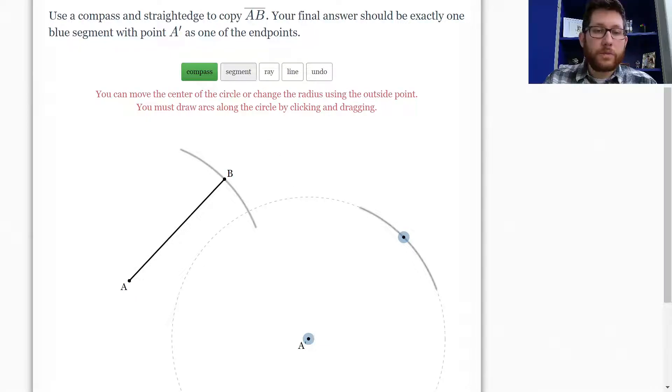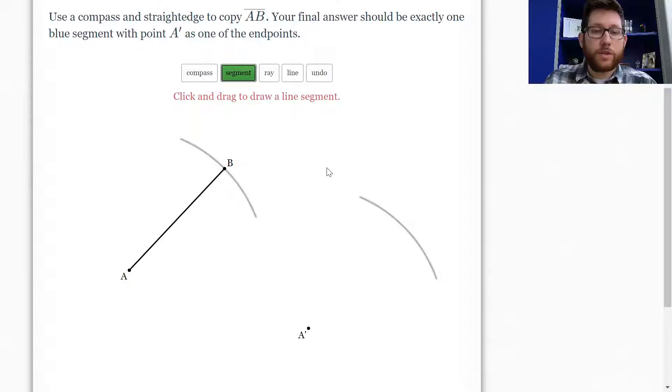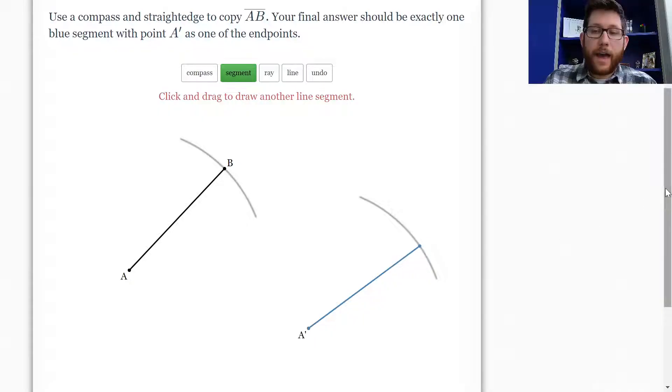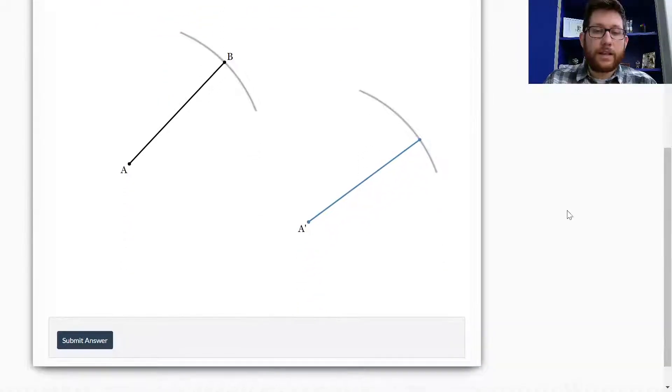And now what I'm going to do is I'm going to use this segment. So segment, ray, and line, those are all straight line tools. So I'm going to use this segment here, and I'm going to go from A, and I'm going to drag it out to any point. Notice it's the same length, even though it's going in different directions. Any point on here, and then that is going to be the copy of my line segment.